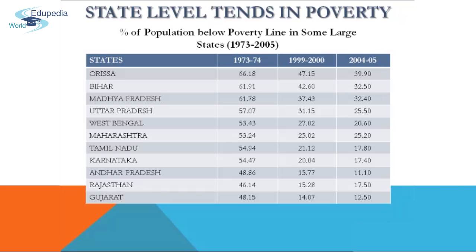State-level trends in poverty are shown in the table. Five states — Uttar Pradesh, Bihar, Madhya Pradesh, West Bengal, and Orissa — account for about 70 percent of India's poor during 1973-74, with about half of their populations living below the poverty line. West Bengal, Maharashtra, Tamil Nadu, Karnataka, Andhra Pradesh, and Gujarat showed remarkable progress, while Madhya Pradesh and Uttar Pradesh performed reasonably well in reducing poverty.